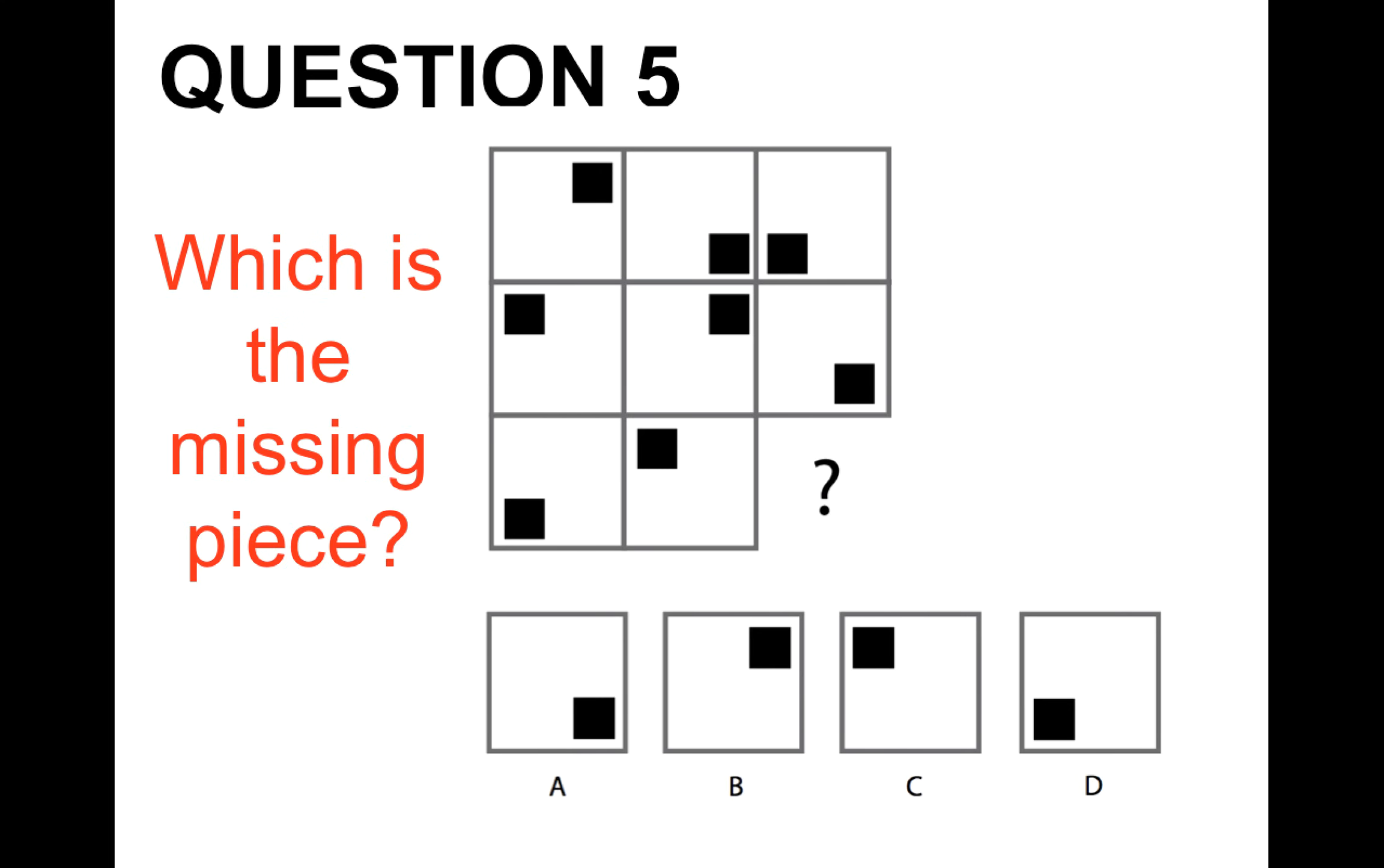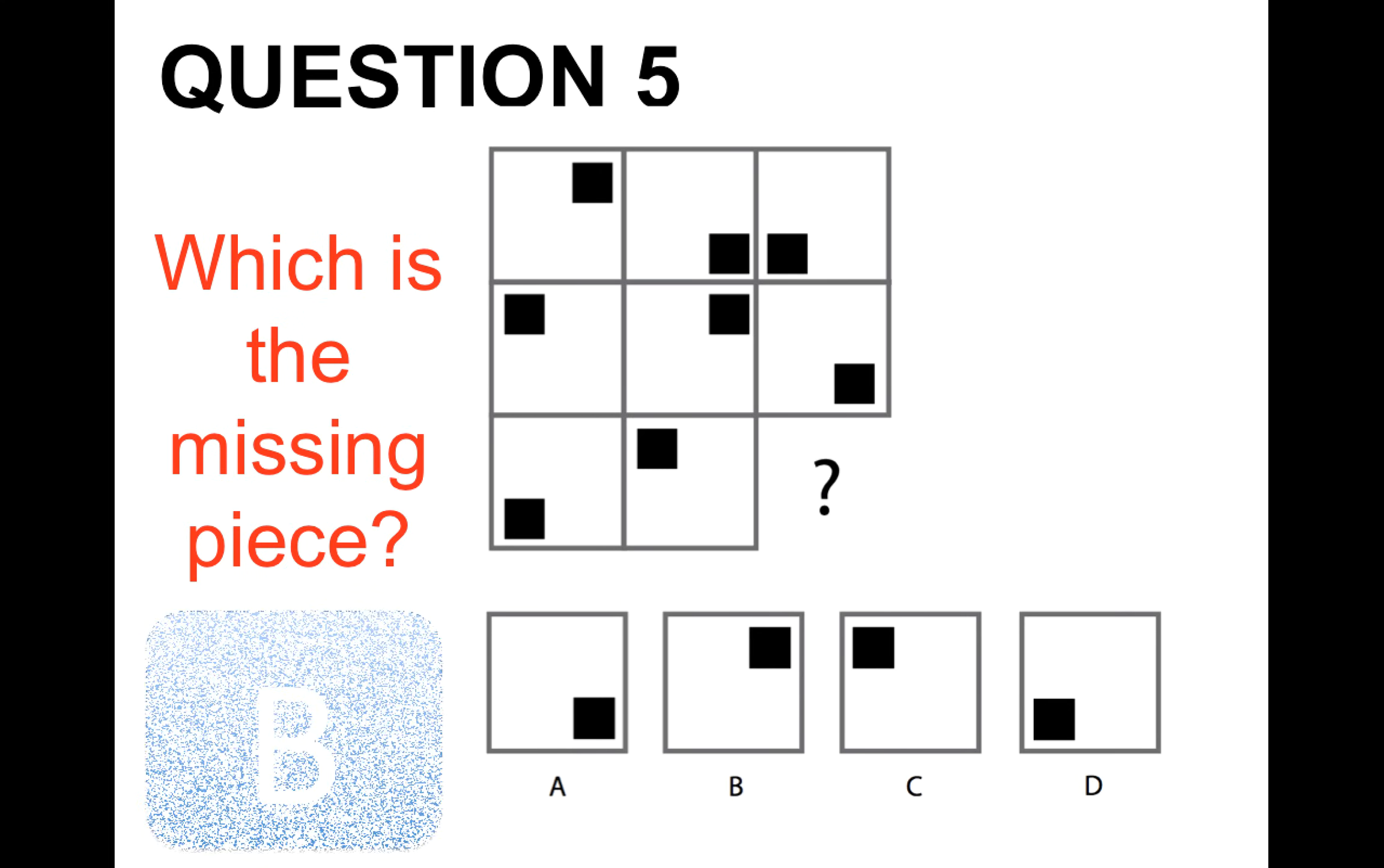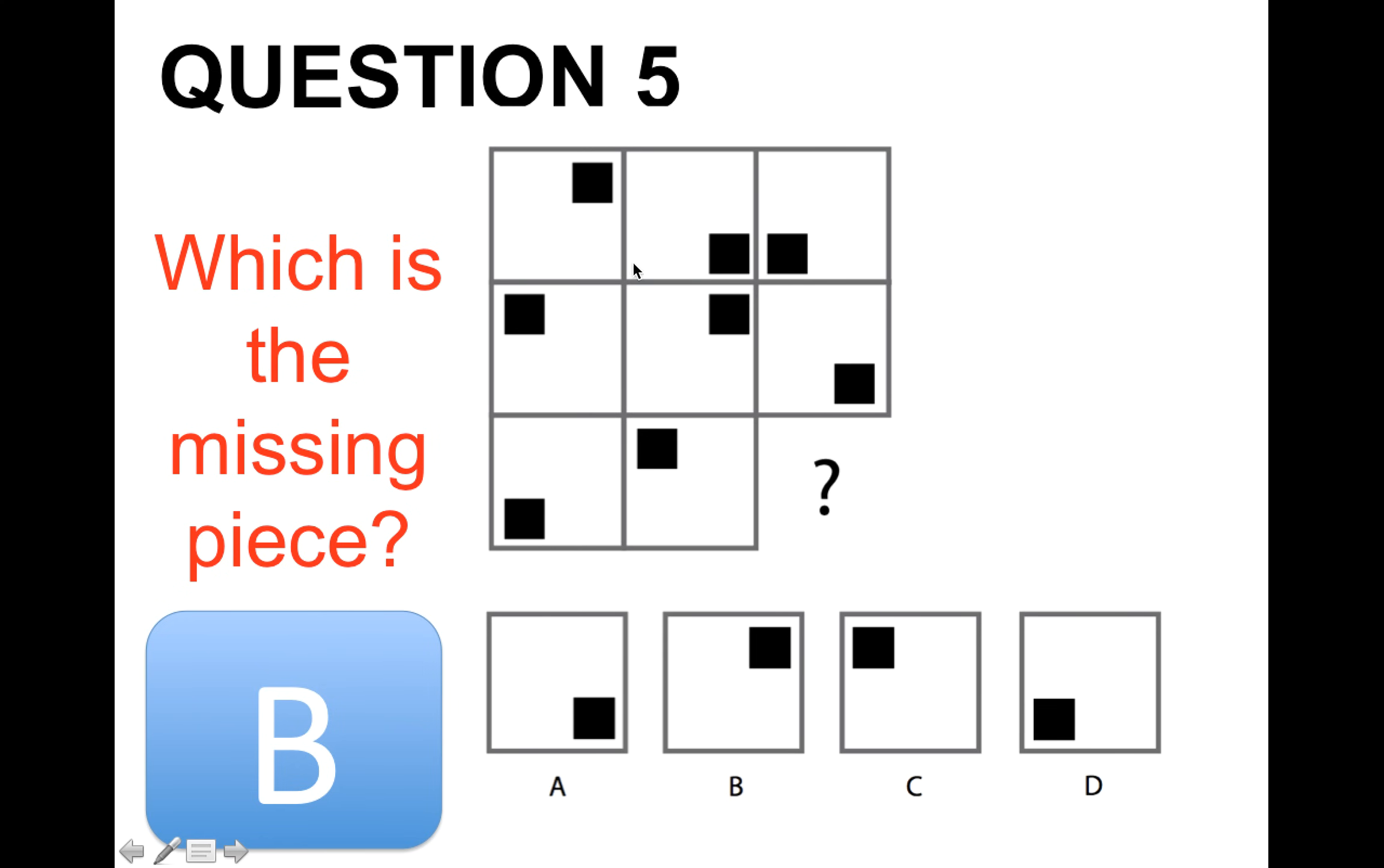Question number five. Which is the missing piece from A, B, C or D? And the correct answer is B. Because if you look at the first one in the top left you'll see that the square is in the top right hand corner. And then if you move over to the second one it's moving down to the bottom right. So it's actually moving around clockwise each time until we get to the bottom. Which means it needs to be in the top right because that one there is in the top left. So they're moving around clockwise each time as they go along.